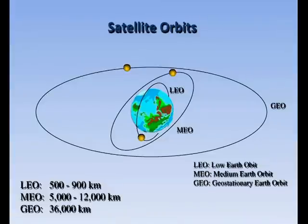Let's look into another classification of orbits depending on their height above the earth. Orbits are classified as low earth orbit, medium earth orbit, and geostationary earth orbit. LEO satellites rotate about 500 to 900 km above the earth and their period of rotation is 90 to 120 minutes. MEO satellites rotate about 9000 to 12000 km above the earth, and the geostationary orbit has a period of rotation of 24 hours.